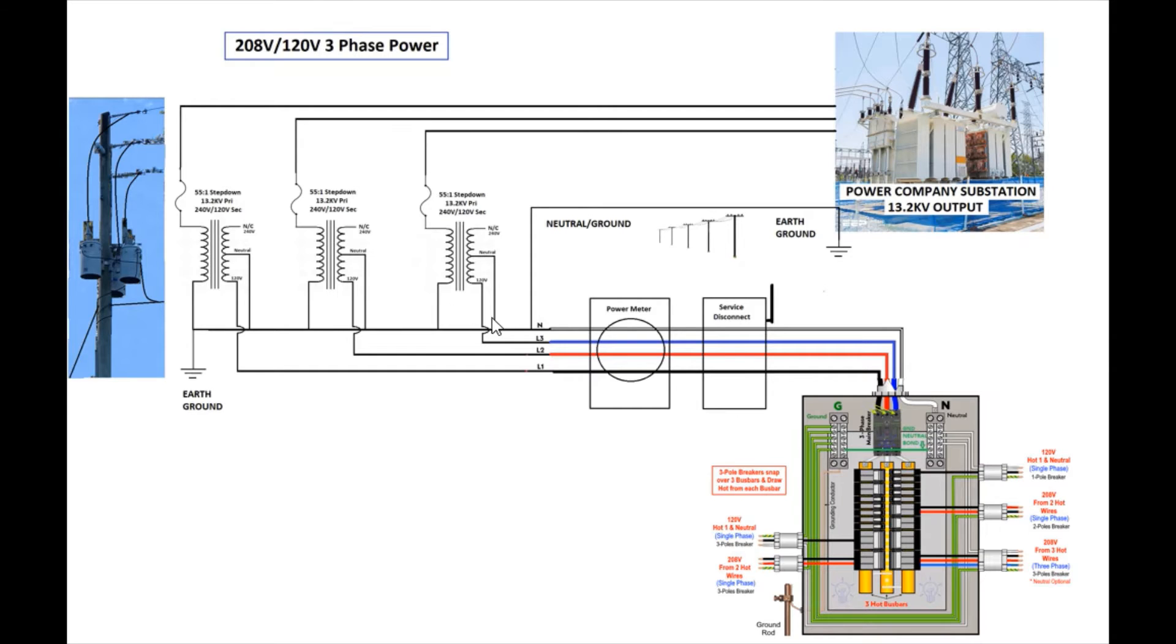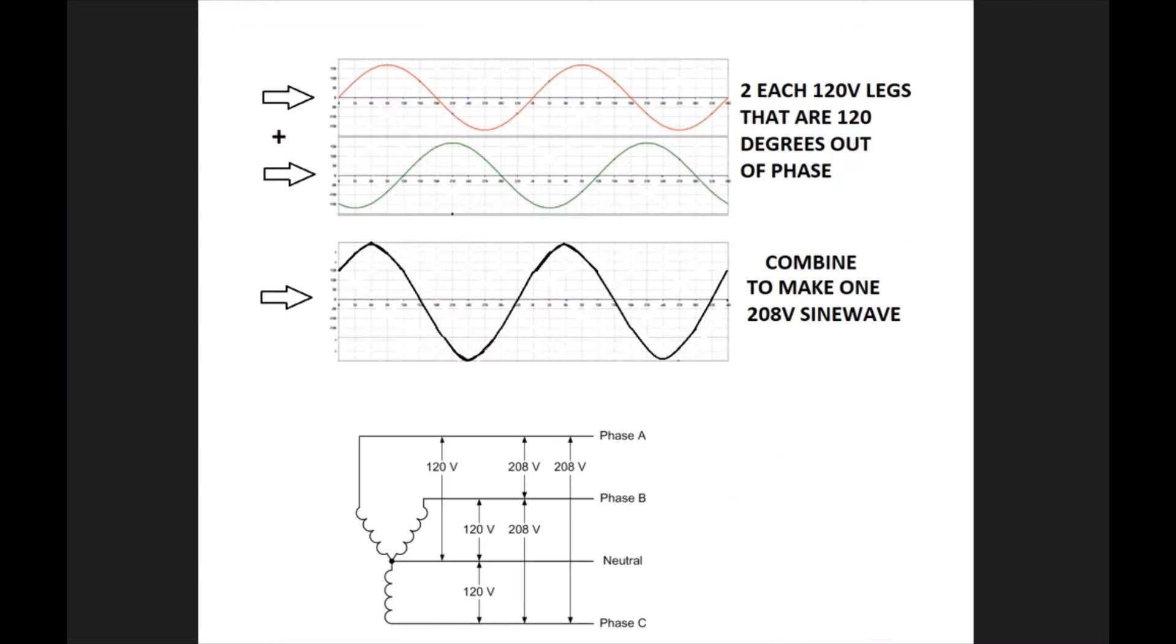So that gives you a little bit better understanding of the phase part about it, how they're separated. Now the other part that's weird is this 208 volts, and the 208 volts are measured across any of the combination of the three legs, so like L1 to L2 or L2 to L3.